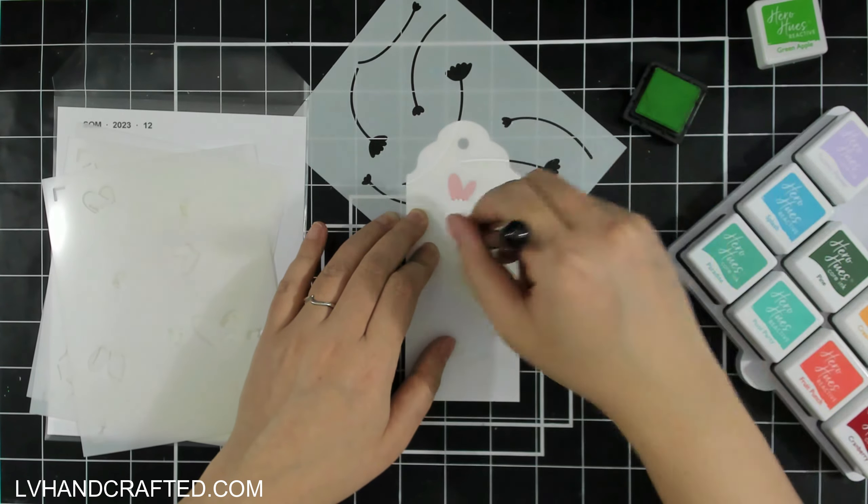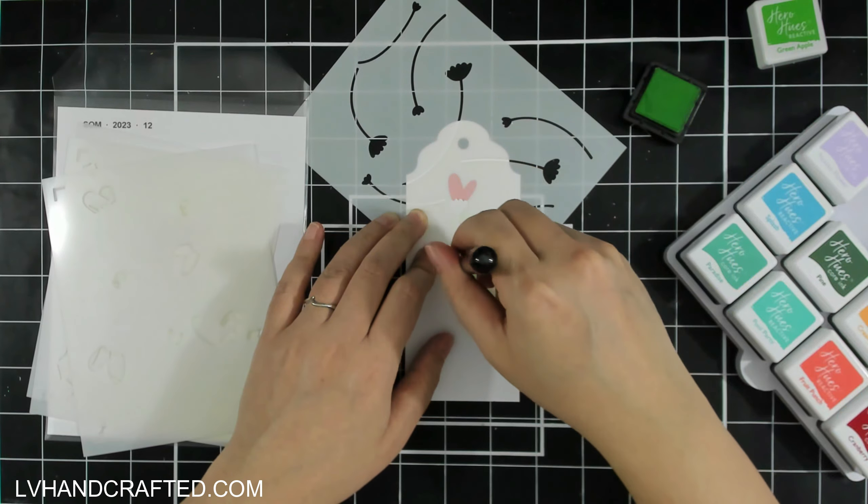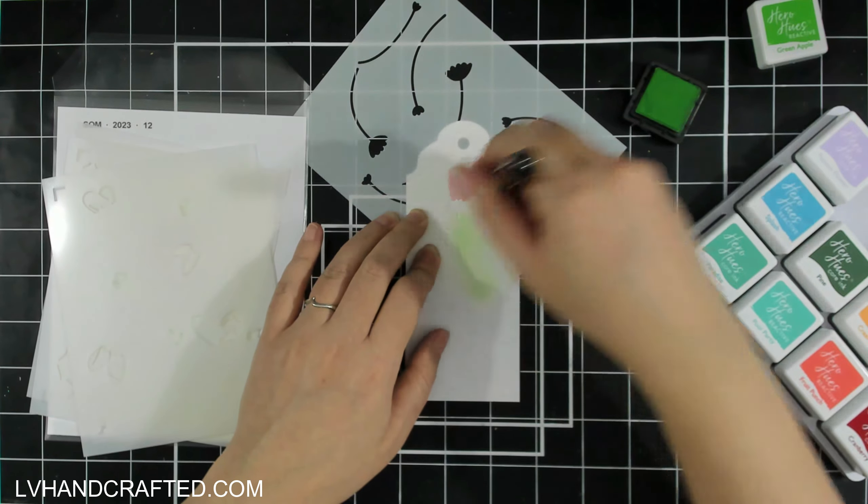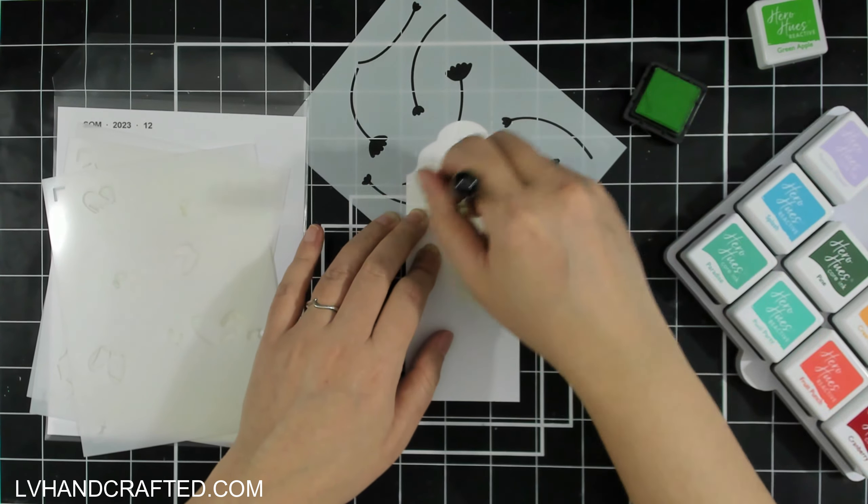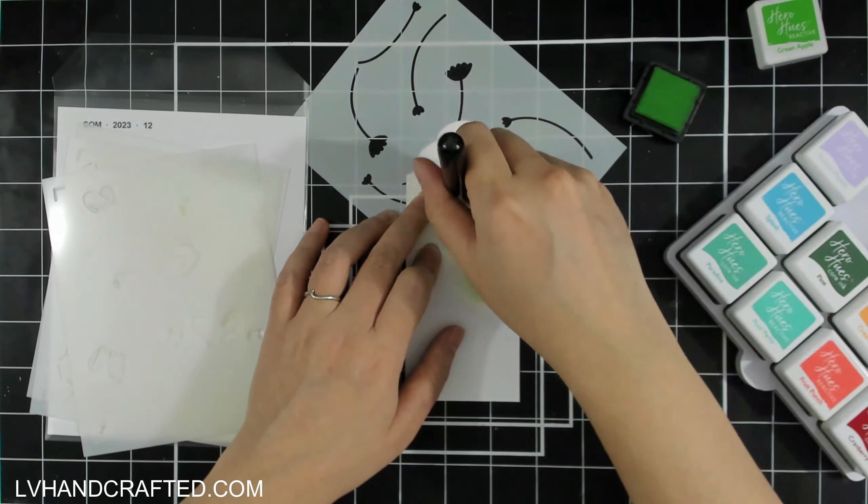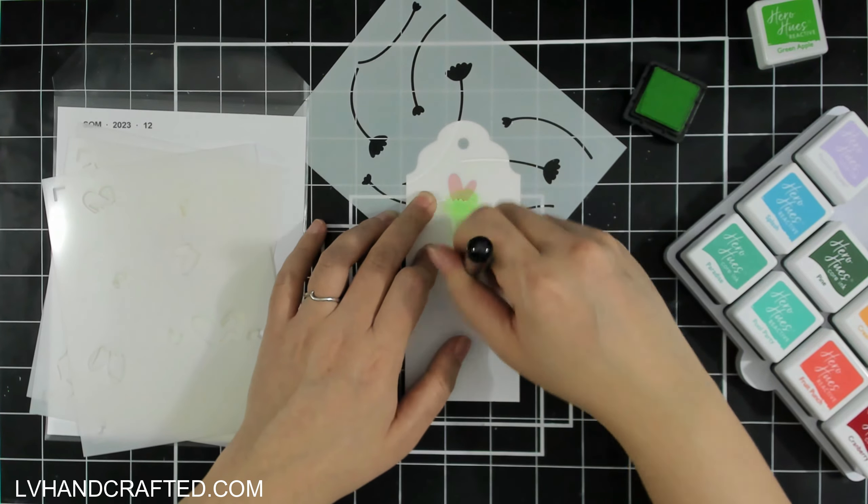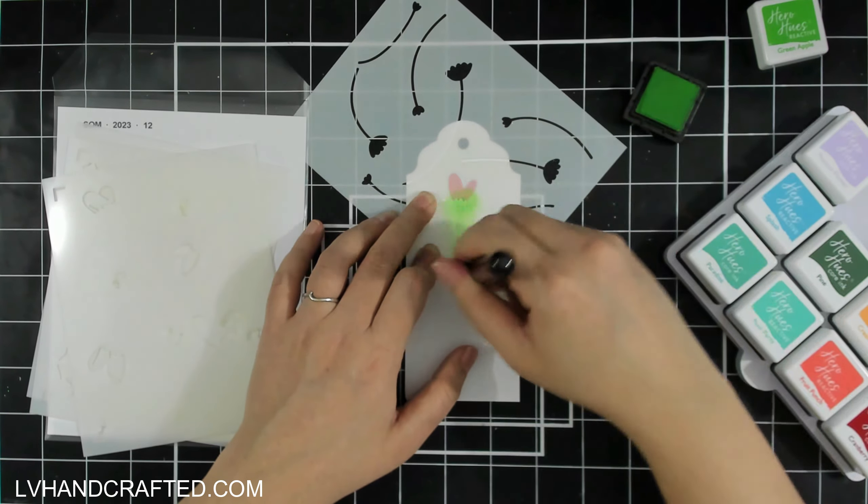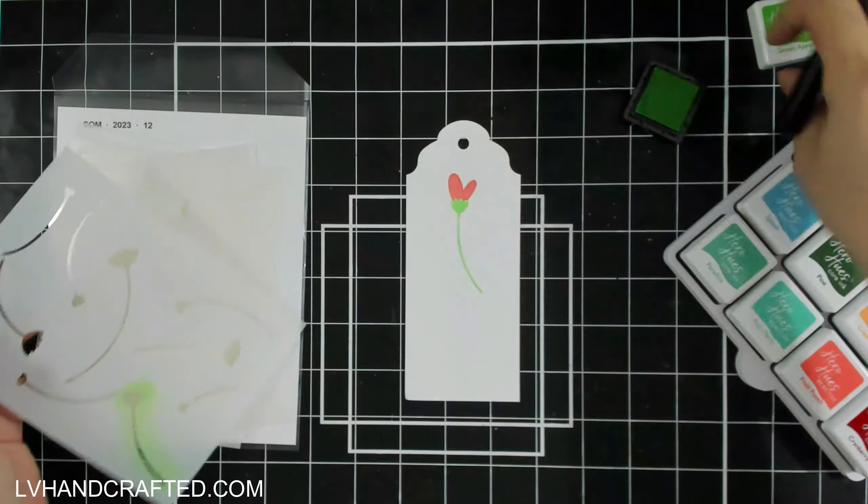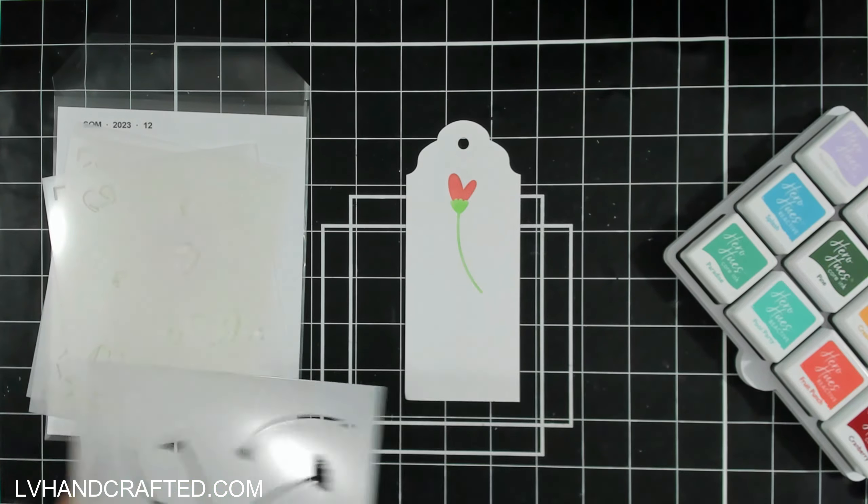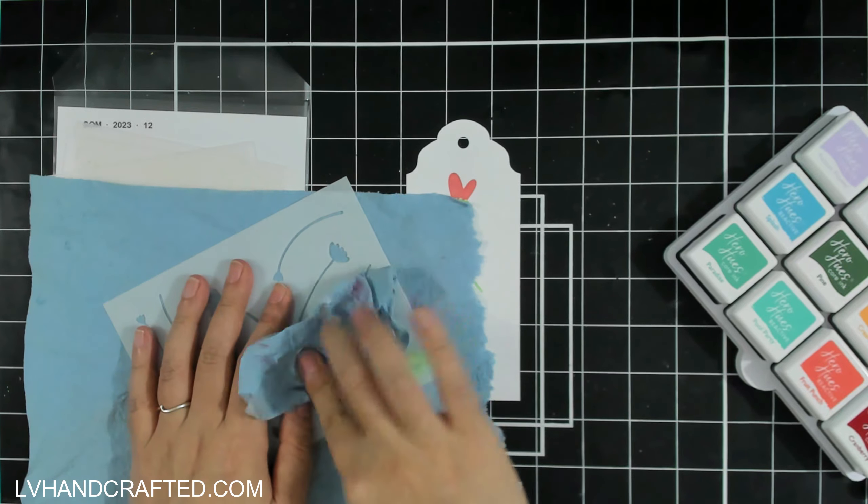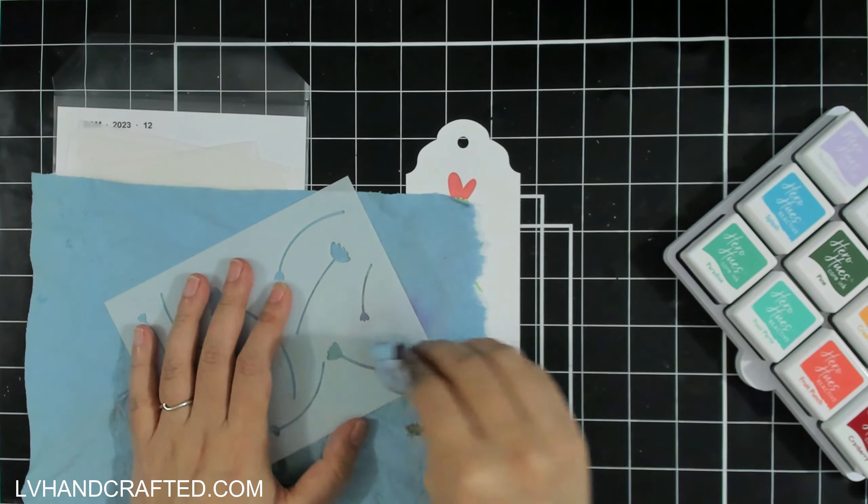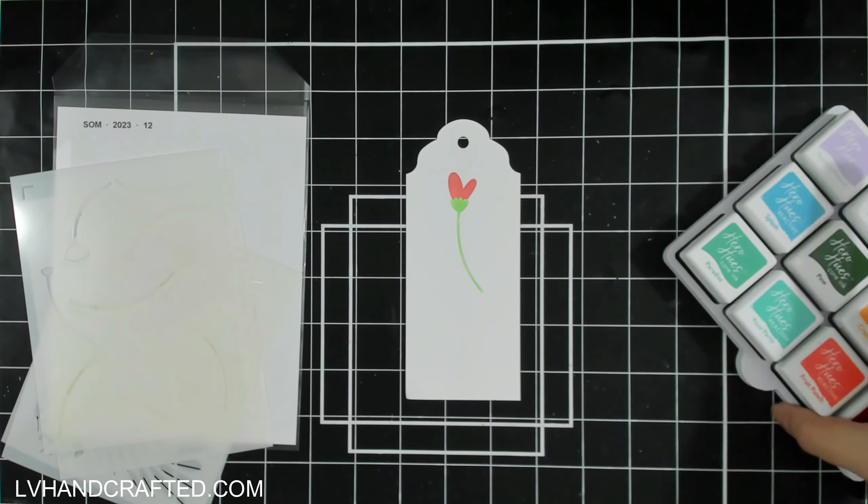The design elements are far enough apart where it's pretty easy to do some selective stenciling. If you wanted to just do what I'm doing where I'm picking just one of the flowers to ink through onto my tag, obviously you could do this with any stencil. Just mask off the areas that you don't want to stencil through, but this one, the designs are far enough separated from each other.